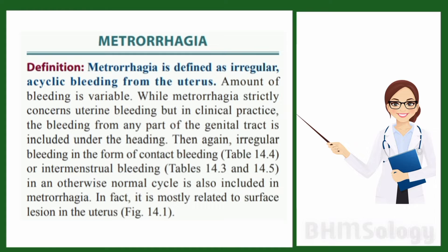Metrorrhagia is irregular uterine bleeding which can vary in the amount of bleeding. Clinically, bleeding which is in the genital tract is also included in this category, including the form of contact bleeding.